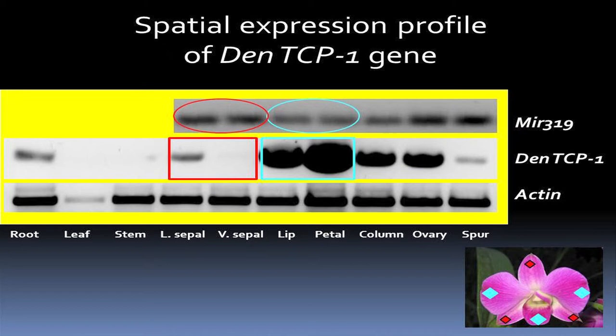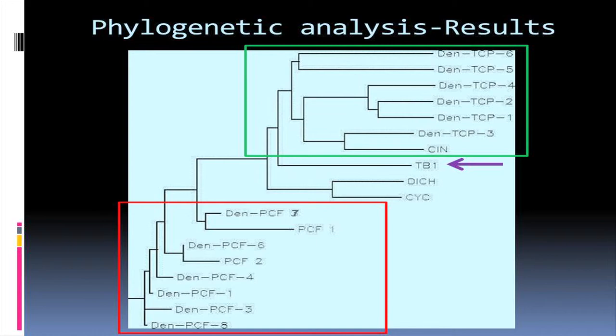This is where we saw our results. There's a big difference between the expression of TCP in the lip and the petal. The lip and the petal together are known as the second whorl of the flower, making up the two petals and the lip. Not only is there a difference between the lip and the petal, but also a difference between those and the sepals, which are known as the first whorl of the flower. In addition, there's a correlation between our TCP gene and MIR319, which is a microRNA gene that Tyson Carter will be talking about next. Where there's more TCP, there is less MIR319 and vice versa, showing a correlation between the two.